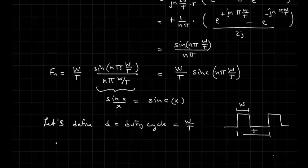So finally, let's rewrite this one last time. Then f of n is equal to the duty cycle times the sinc of n pi times the duty cycle.